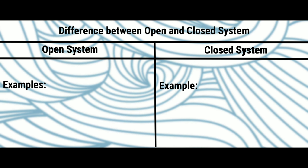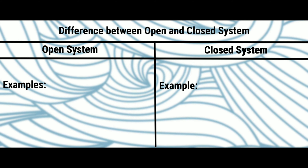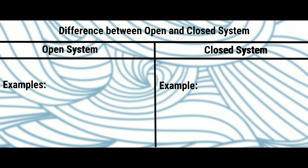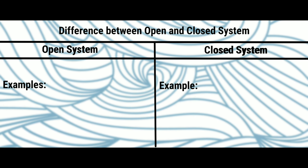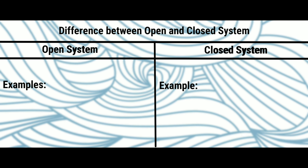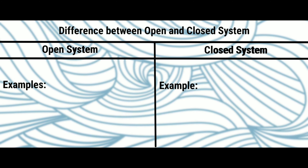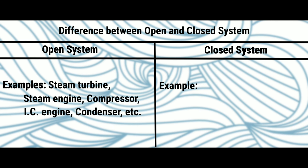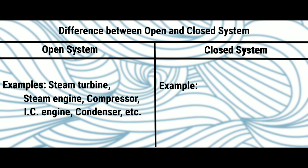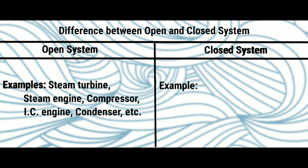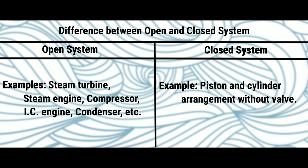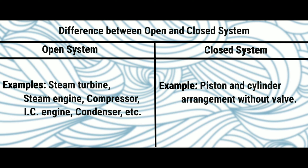If you think of or predicted some examples, comment them below. If you can suggest more examples, you are one step further! If not, don't worry. Examples of open systems include: steam turbine, steam engine, compressor, IC engine, condenser, etc. Examples of a closed system include a piston and cylinder arrangement without a valve.